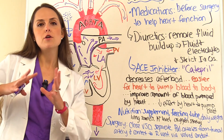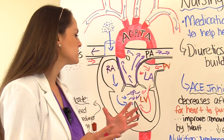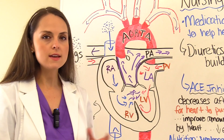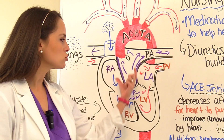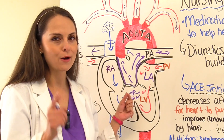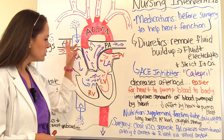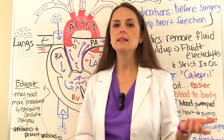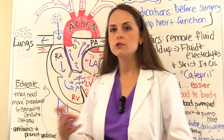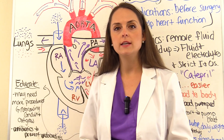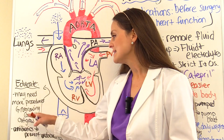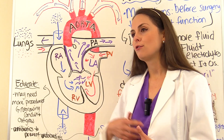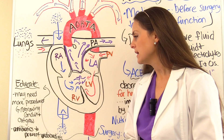Surgery typically occurs within the first two weeks of life. The VSD is closed with a patch, eliminating the connection between the right and left ventricle. The pulmonary arteries are separated from the truncal artery and connected to the right ventricle via a valve conduit. Families must be educated that follow-up with a cardiologist is needed after surgery, as the conduit may narrow or be outgrown as the child grows, requiring additional procedures.